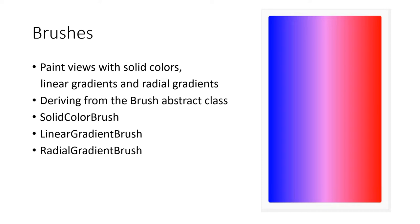The next feature is brushes. With brushes, you can paint views with solid colors, linear gradients, and radial gradients. This was already available in other XAML-based technologies like WPF or the Universal Windows Platform, and finally it is available for Xamarin.Forms development. We have three kinds of objects: the solid color brush, which is a single color; the linear gradient brush; and the radial gradient brush, which is a circular gradient.